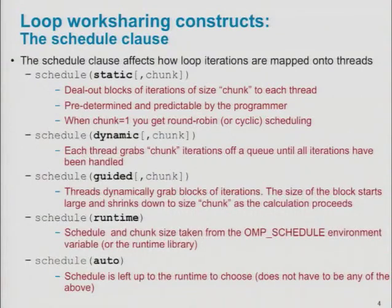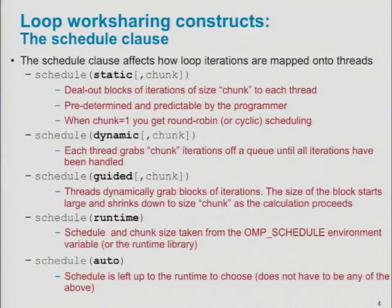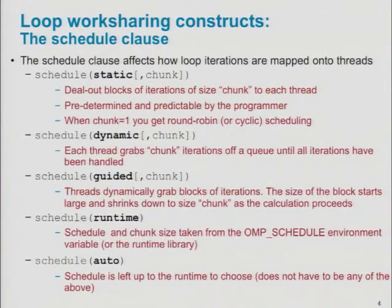The cyclic distribution has nice properties — it's very simple to implement and doesn't require a division operator. You can have wider chunks, like assigning two or three iterations at a time to a thread. The dynamic mode is for when you have a lot of variability in the cost of each iteration — if you don't have threads compete and grab an iteration when they're ready, you're likely to get load imbalance. Dynamic assignment is relatively expensive because it requires synchronization for threads to determine who gets the next piece of work. You can use a chunk parameter to amortize this, grabbing multiple iterations as an atomic unit.